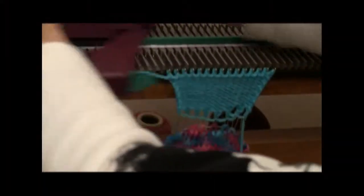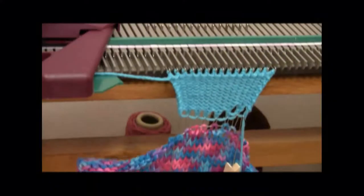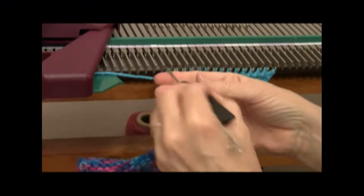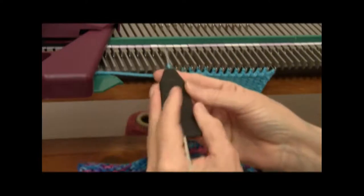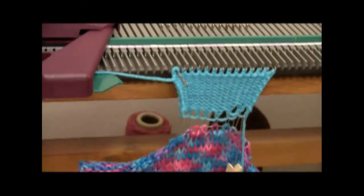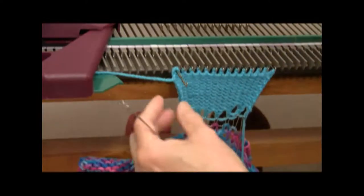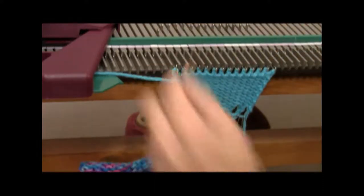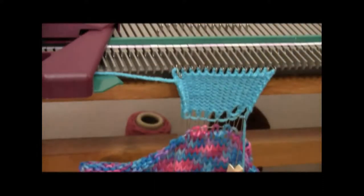Once you've knitted 14 rows you're going to decrease, on the carriage side, each row, until the needles are all decreased out of work. What I do is I move the stitch over, and then I like to bring it back so that it's in forward working position with an open latch. Knit across.